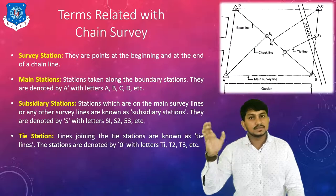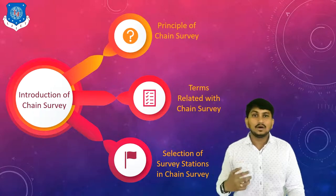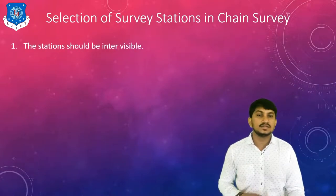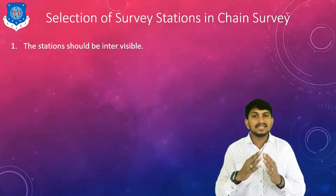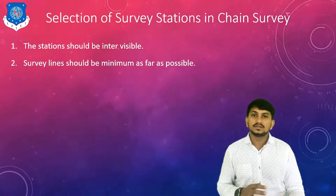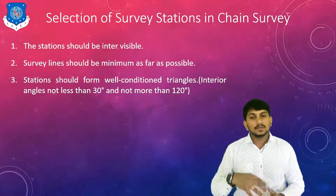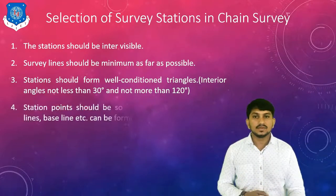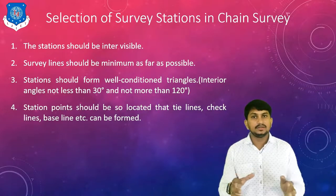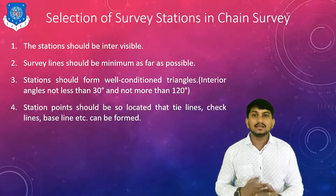Now let's discuss the selection process for survey stations. First, the station should be inter-visible. Second, survey lines should be kept to a minimum as far as possible. Third, stations should form well-conditioned triangles having angles of about 30 to 120 degrees. Fourth, stations should be located so that all types of lines — main survey line, check line, tie line, base line — are formed in the drawing.